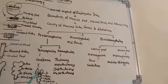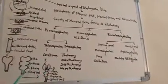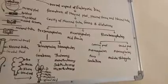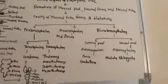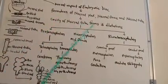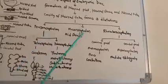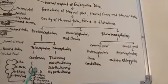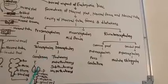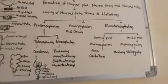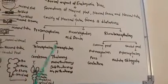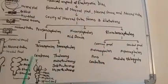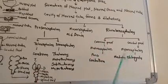From the prosencephalon, further there is a formation of two dilatations. The mesencephalon remains mesencephalon, and from the rhombencephalon there is a formation of two further dilatations. Here you can see the cavity of the neural tube forms three dilatations: prosencephalon, mesencephalon, and rhombencephalon. From the prosencephalon, two dilatations form named the telencephalon and the diencephalon. The mesencephalon remains mesencephalon with no further dilatations. The rhombencephalon is divided into two different parts: the metencephalon and the myelencephalon.